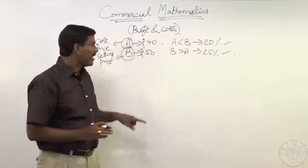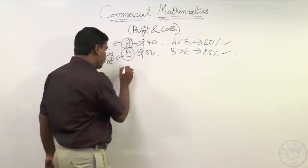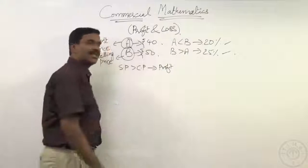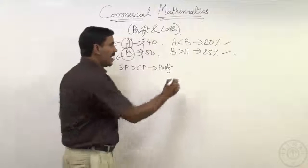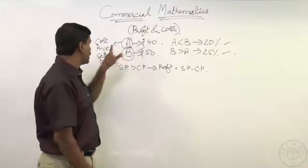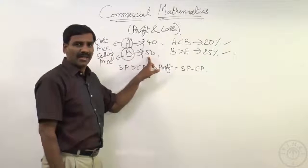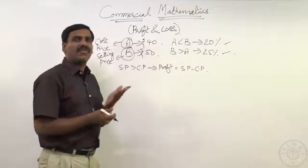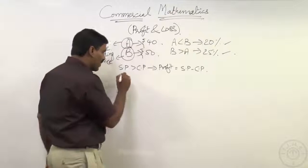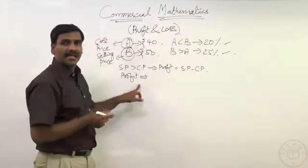When selling price is more than cost price, the transaction yields profit. Selling price minus cost price is nothing but profit. If a person purchased an article for 40 rupees and is selling it for 50 rupees, he made a profit of 10 rupees. And the 10 rupees is what percentage of his cost price — that is his investment of 40 rupees. Profit percentage is calculated as whatever profit he is making out of the cost price.